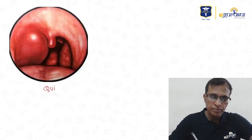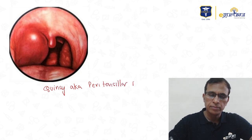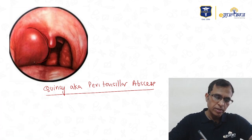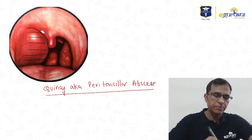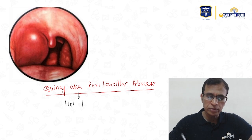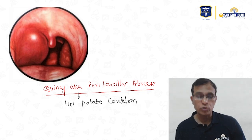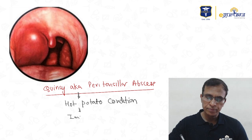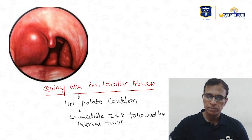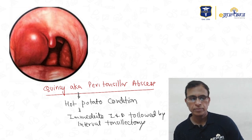This is Quinsy, also known as peritonsillar abscess. You can see the bulge almost touching the uvula. This condition is compared to the hot potato voice. The treatment is immediate incision and drainage followed by interval tonsillectomy.